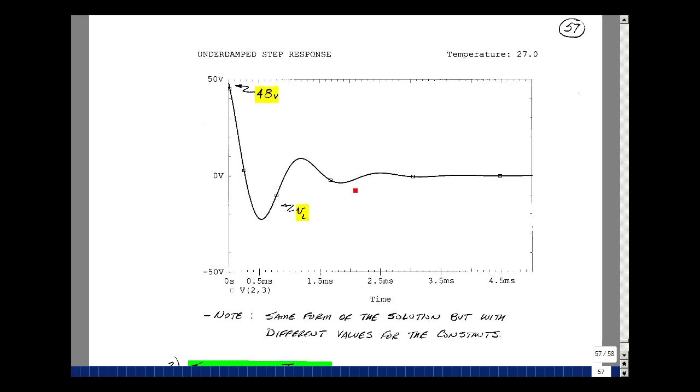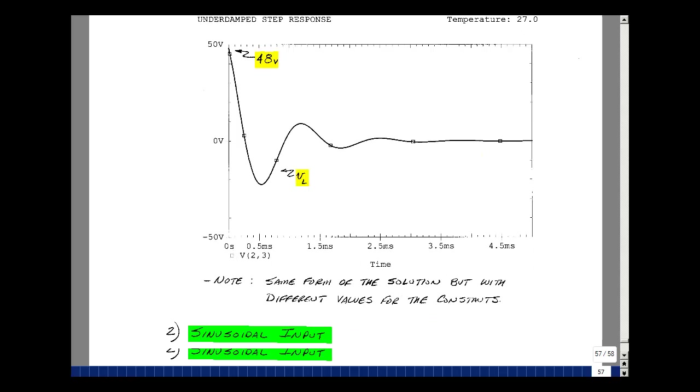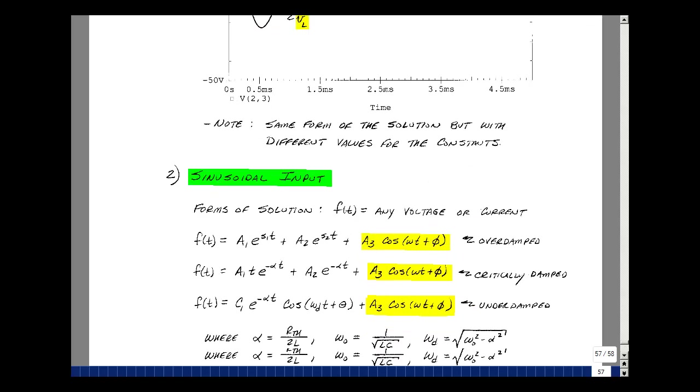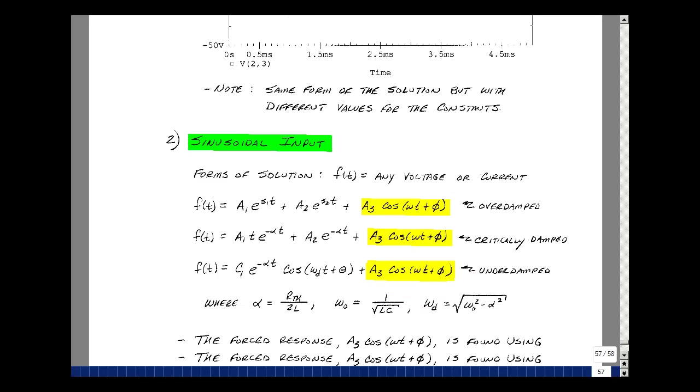What if we had other types of forcing functions? Suppose we had a sinusoid. Well then the form of our solution would again be the natural response plus the forced response. So if you put a sinusoid in, you're going to see that that sinusoid is going to have a different magnitude and a different angle as it's interacting with our circuit. And I add this again to each of the natural responses.